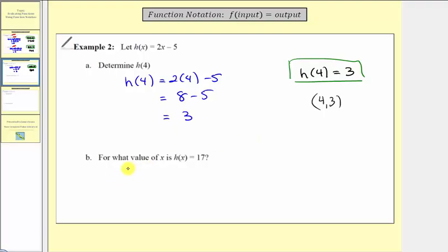Now part b is a little bit different. It says for what value of x is h(x) equal to 17? Notice here we're given the output or function value 17, and asked to determine the input x. To answer this question, we'll substitute 17 for h(x) and solve for x.